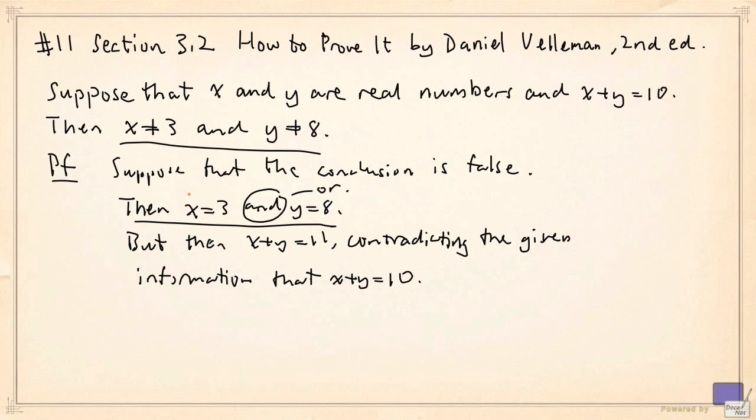So we have made a blunder in formulating the negation of the conclusion. And that is why this is not a valid proof by contradiction.